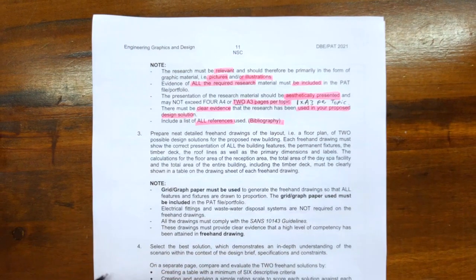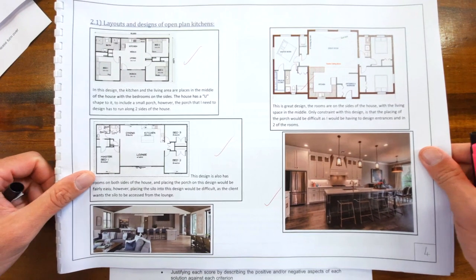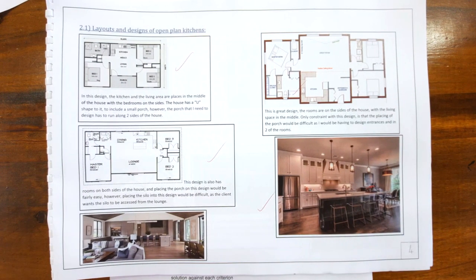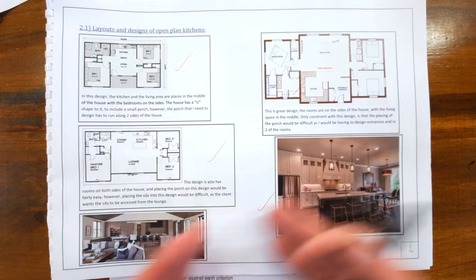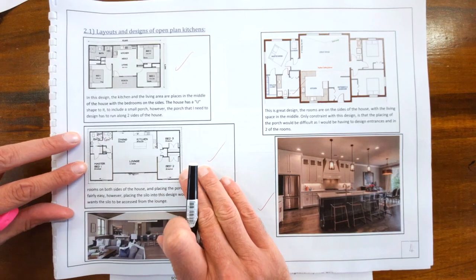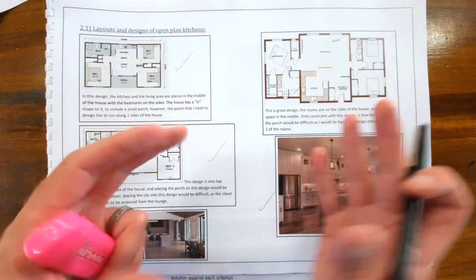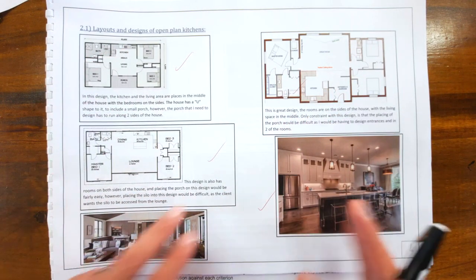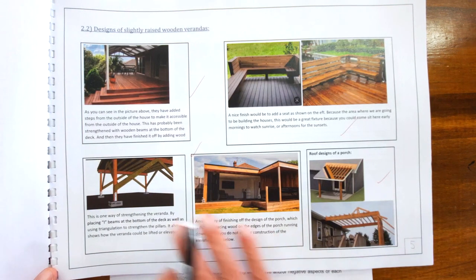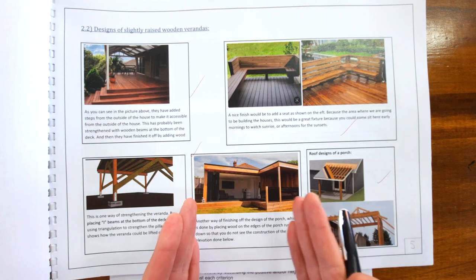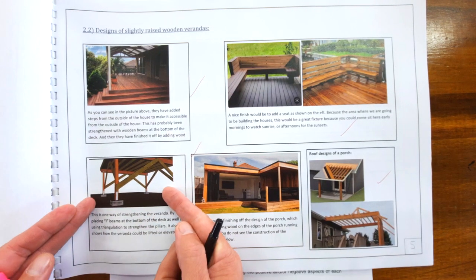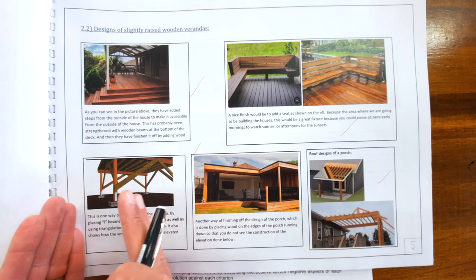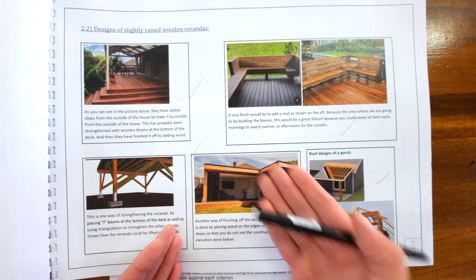Let's look at a couple of examples from previous years. In one case, learners had to design an open-plan kitchen. You can see there are two components: the design — the look and feel — and the actual practical construction details showing how things fit together and the layout. There's a synergy between the design part and the construction part. Here we also have a raised wooden veranda where again they needed to research both the design and the construction.